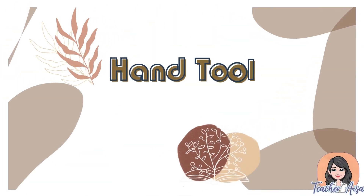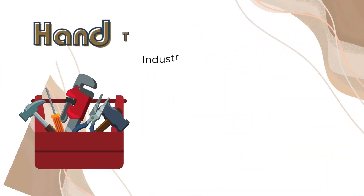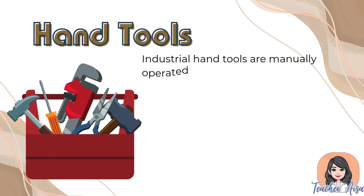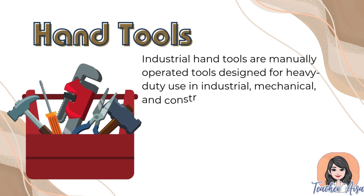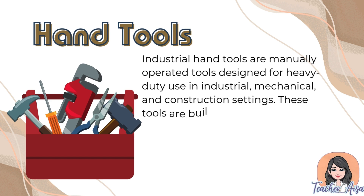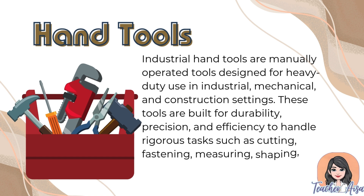Now let's have the hand tools classifications. Industrial hand tools are manually operated tools designed for heavy-duty use in industrial, mechanical, and construction settings. These tools are built for durability, precision, and efficiency to handle rigorous tasks such as cutting, fastening, measuring, shaping, and assembling materials.